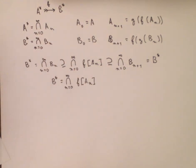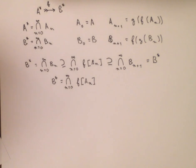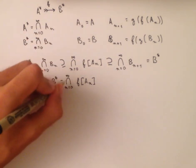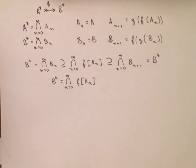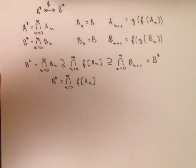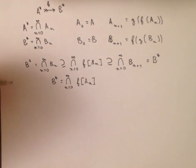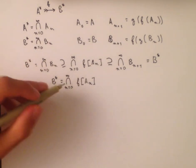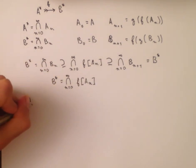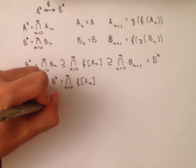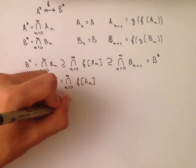We get that B* is equal to the intersection as n goes from 0 to infinity of F of A_n. Now we're almost there because we already have that F is an injection. What we really need is that it's a bijection — that it's onto and covers all of B. To get that, we need B* equals F of A*. To get that from this equality, all we really want to do is move the intersection to the inside of the brackets. I'm now going to show that if we have an injection F, then we can do that — this intersection equals the function applied to an intersection.